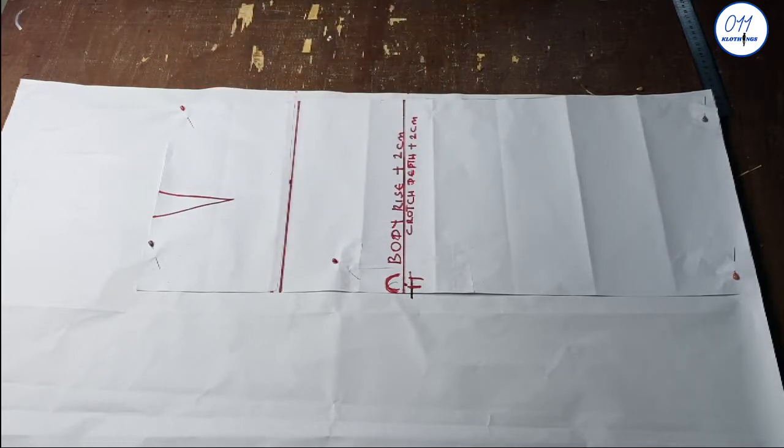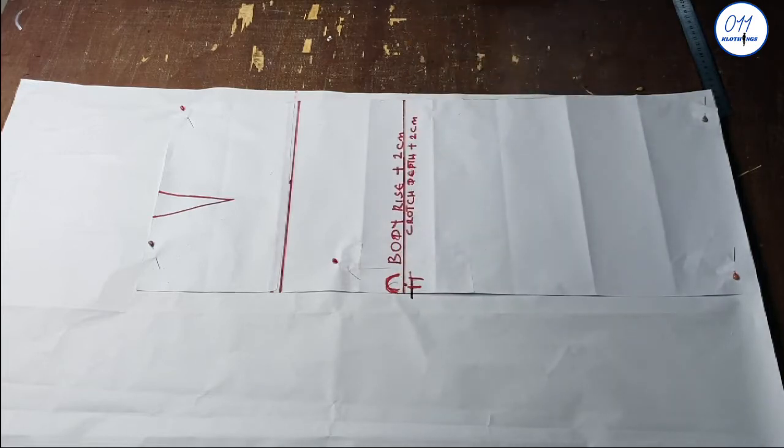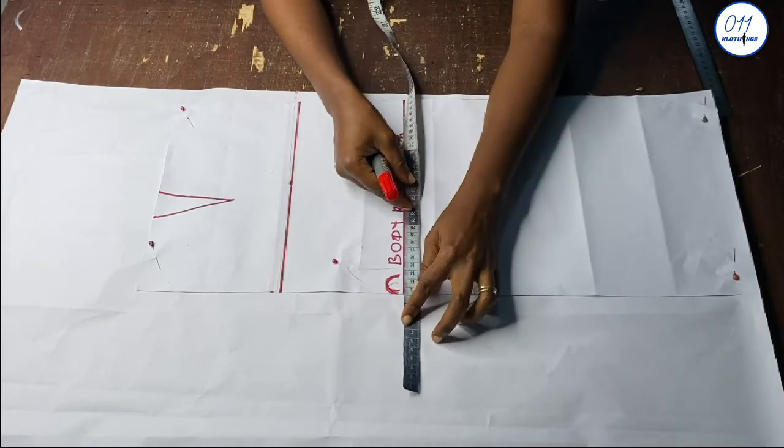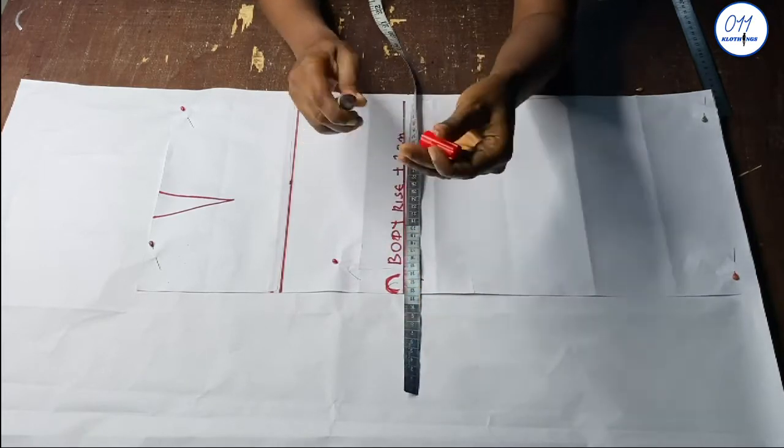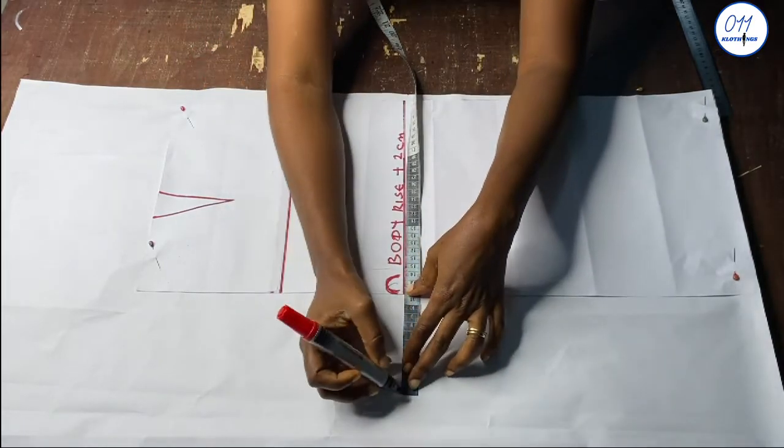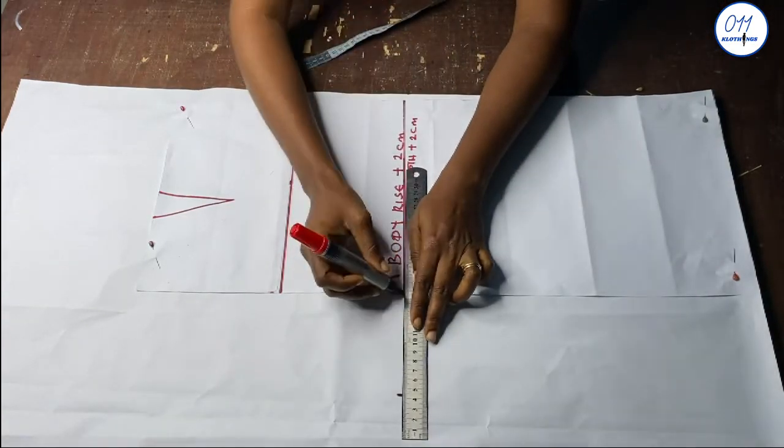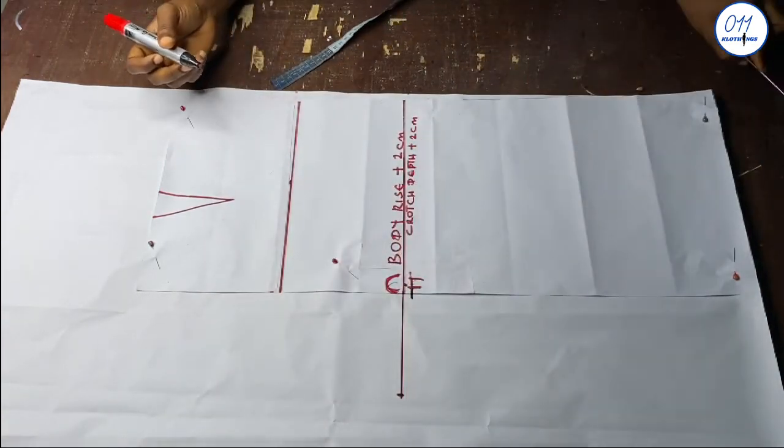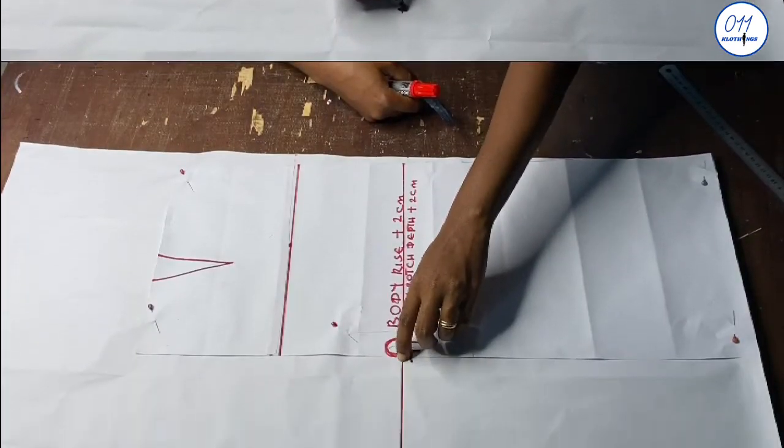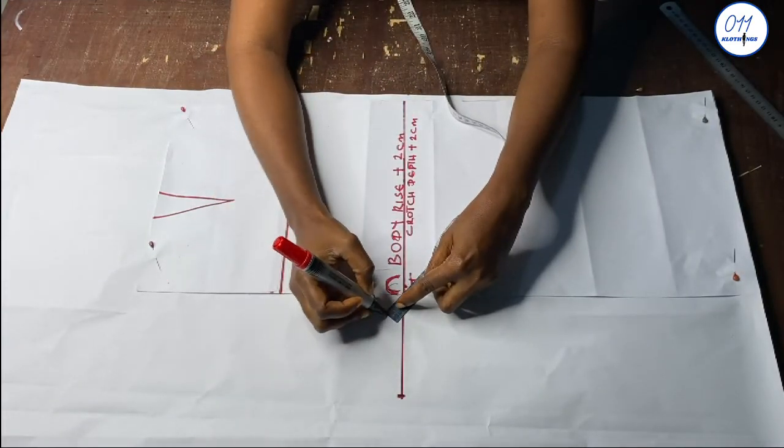I will now measure out the 11.4 at the center front on the crotch depth line. I will extend the line using my ruler.